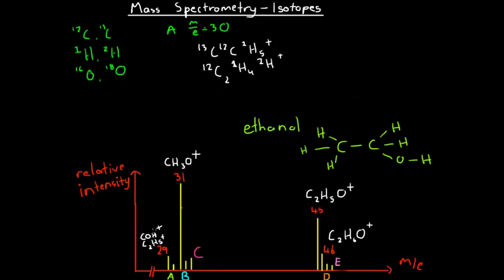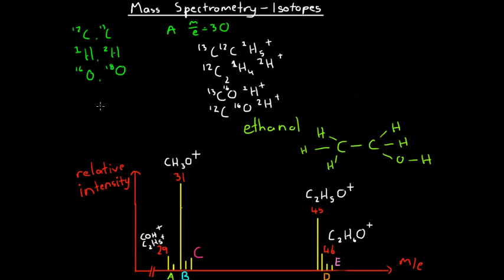Alternatively, the same two changes could have happened to the COH⁺ ion. We could have had carbon-13, oxygen-16, and hydrogen-1 — an increase in mass of one compared to a COH⁺ ion containing carbon-12, oxygen-16, and hydrogen-1. Or we could have had carbon-12, oxygen-16, and hydrogen-2 instead of hydrogen-1, which would also increase the mass by one. Those are the four variations from the regular isotopes that could have caused peak A.